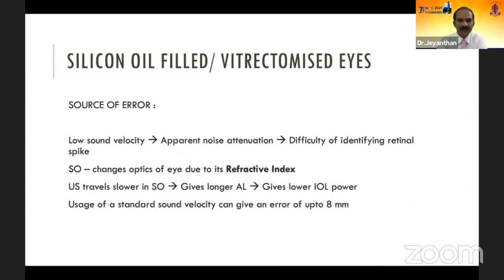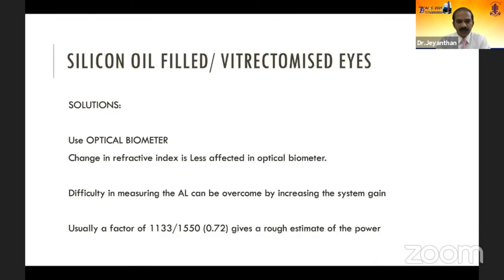For silicon oil-filled eyes and vitreous eyes: the low sound velocity of ultrasound in silicon oil leads to apparent noise attenuation, making it difficult to identify retinal spikes. Silicon oil changes the refractive index in the eye — ultrasound travels very slowly in silicon oil, falsely giving a message that the axial length is longer, leading to a low IOL power calculation. Using standard ultrasound without correction can give an error of up to 8 mm in silicon oil eyes. Solution: use an optical biometer if available, as the change in refractive index of silicon oil is less affected. If using ultrasound, use silicon oil mode and increase gain. A factor of 0.72 multiplied to the IOL power gives a rough estimate of power in silicon oil eyes.